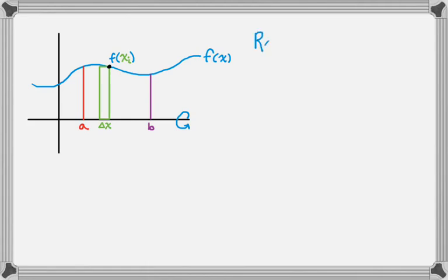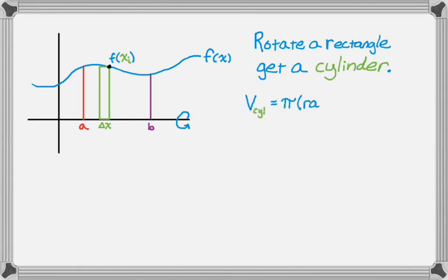If I rotate a rectangle, hopefully you know that rotating a rectangle is going to give you a cylinder, right? So I'm going to get a cylinder, which means that now I can find the volume of that cylinder. So the volume of a cylinder, we know, is pi, and then the radius squared, and then the height.